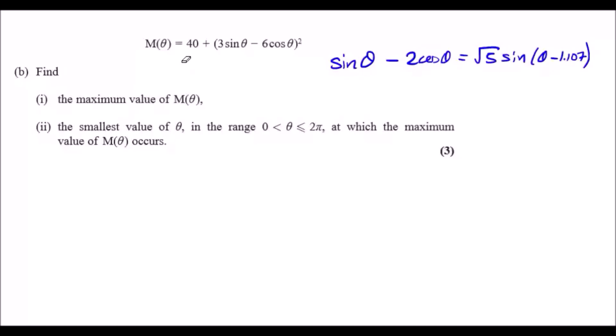And then the smallest value of θ for which this maximum in the first part occurs. Okay, let's have a think. Now one thing I want you guys to know is that inside the bracket here you can see it's three times bigger than this expression here.